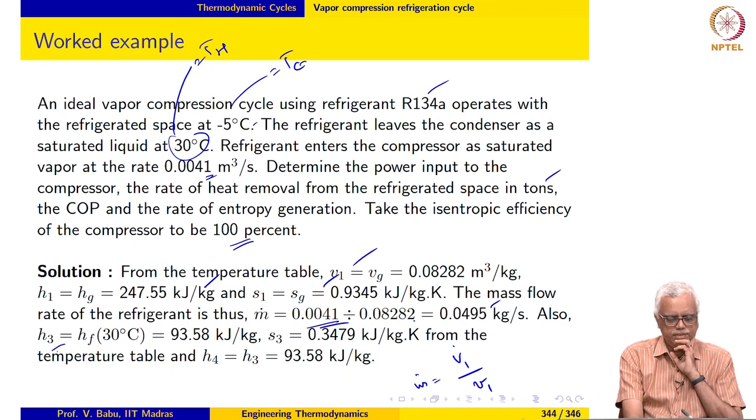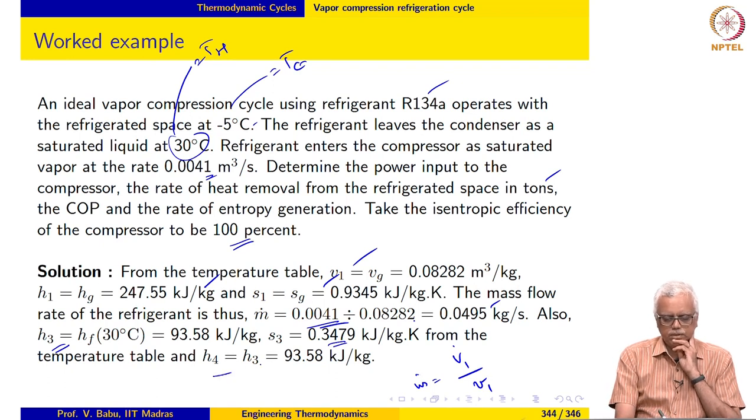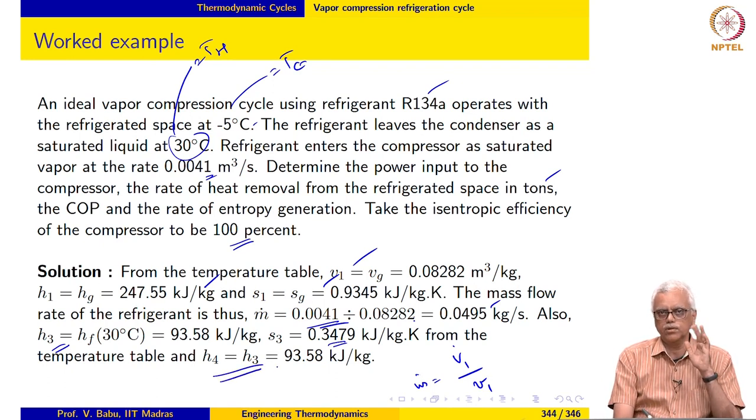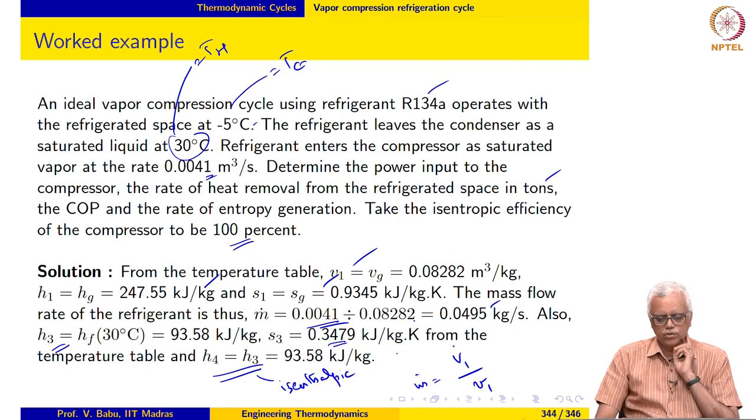It is given that the refrigerant leaves the condenser as a saturated liquid which means H3 is equal to HF at 30 degrees Celsius and S3 is equal to SF at 30 degrees Celsius. The throttling process undergone by the refrigerant is actually we can take it to be an isenthalpic process. So, we take H4 to be equal to H3.